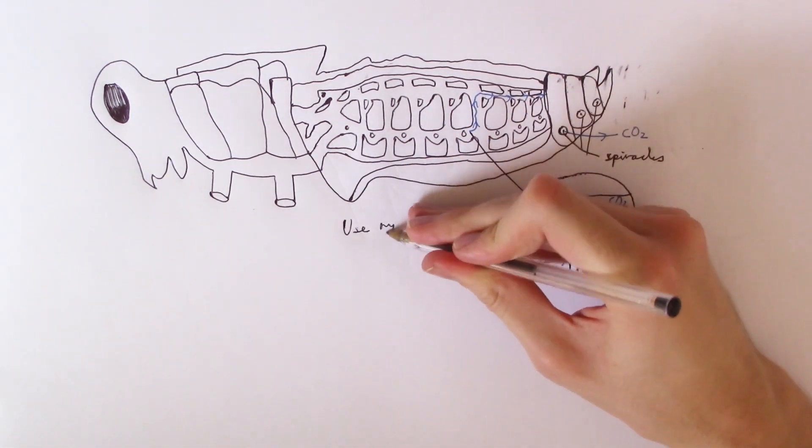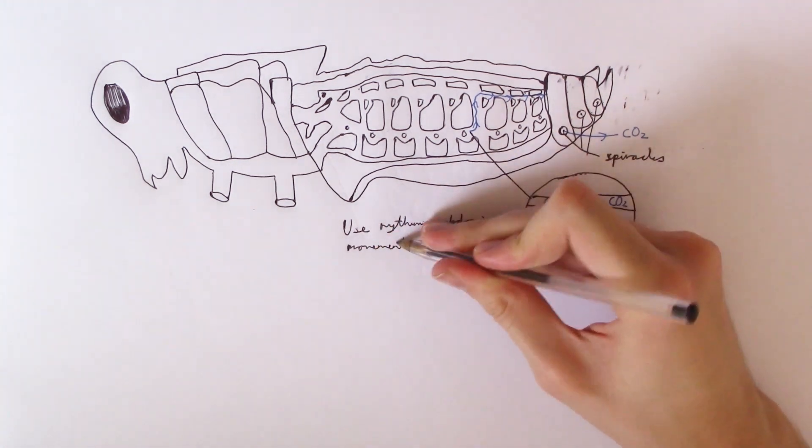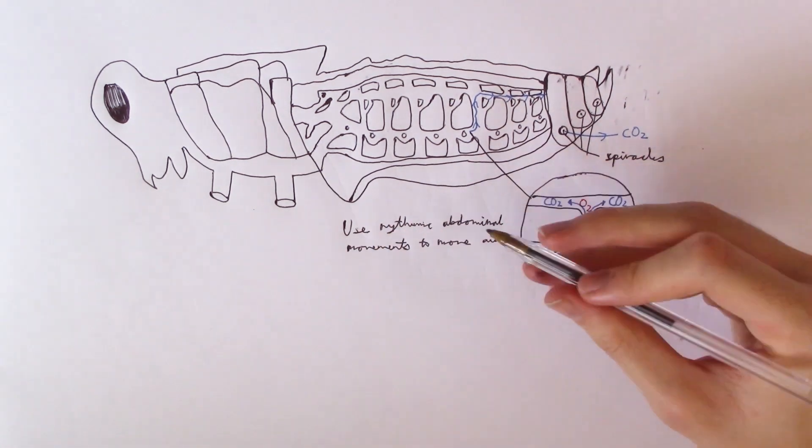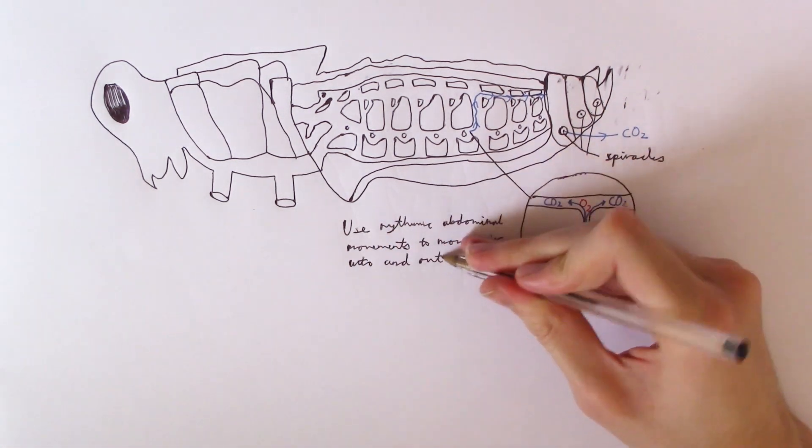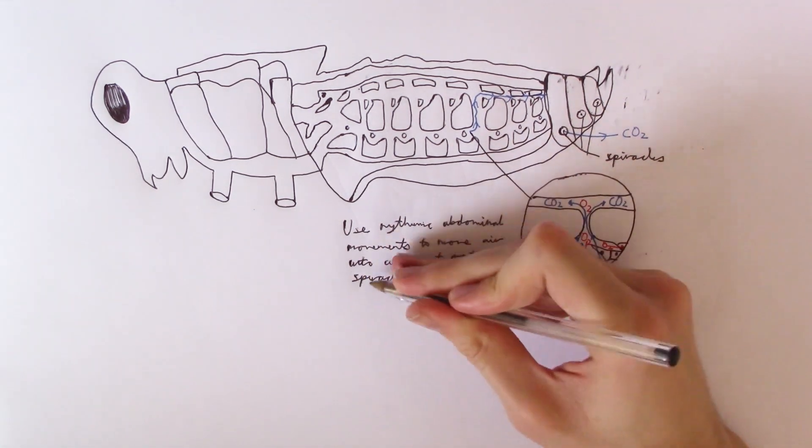Insects use rhythmic abdominal movements to move air into and out of the spiracles.